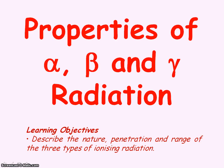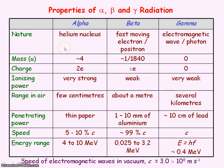We're going to be looking at the properties of alpha, beta, and gamma radiation. An alpha particle is a helium nucleus. It's made up of two protons and two neutrons.